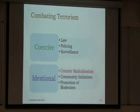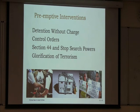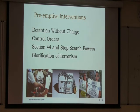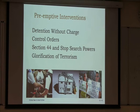Interesting questions arise about why preemptive intervention happens in the context of security and terrorism but not in many other areas — environmental management would be one example, corporate crime and workplace harms another. Just to talk about these more ideational measures around counter-radicalization: some of the hard-edge preemptive interventions that followed 9/11 included extensions of detention without charge, control orders (now disbanded), Section 44 stop-and-search powers (dramatically scaled down because they were technically ineffective), and glorification of terrorism offenses. Many of these have been challenged in courts or disbanded because they weren't effective.